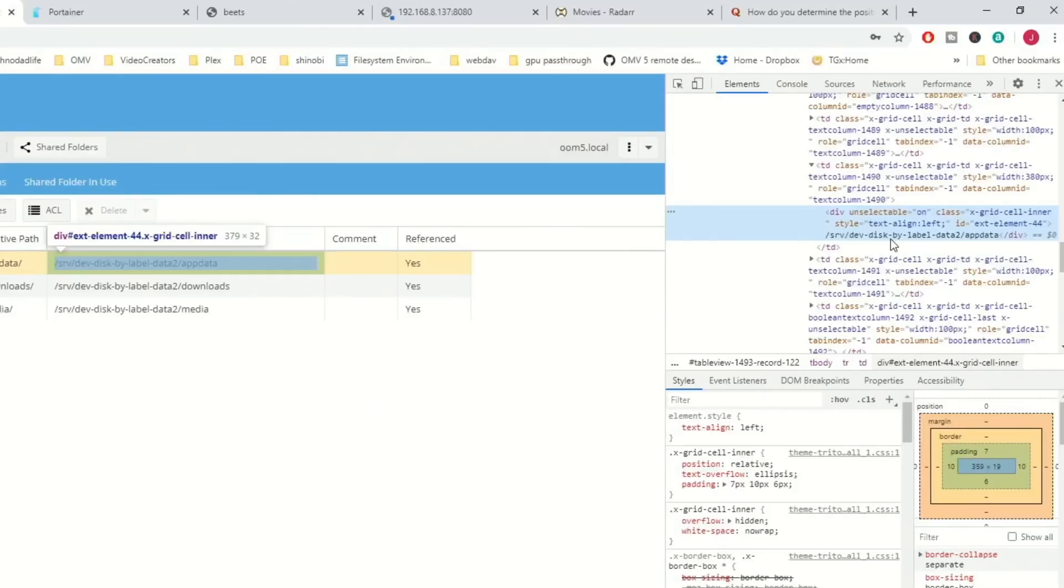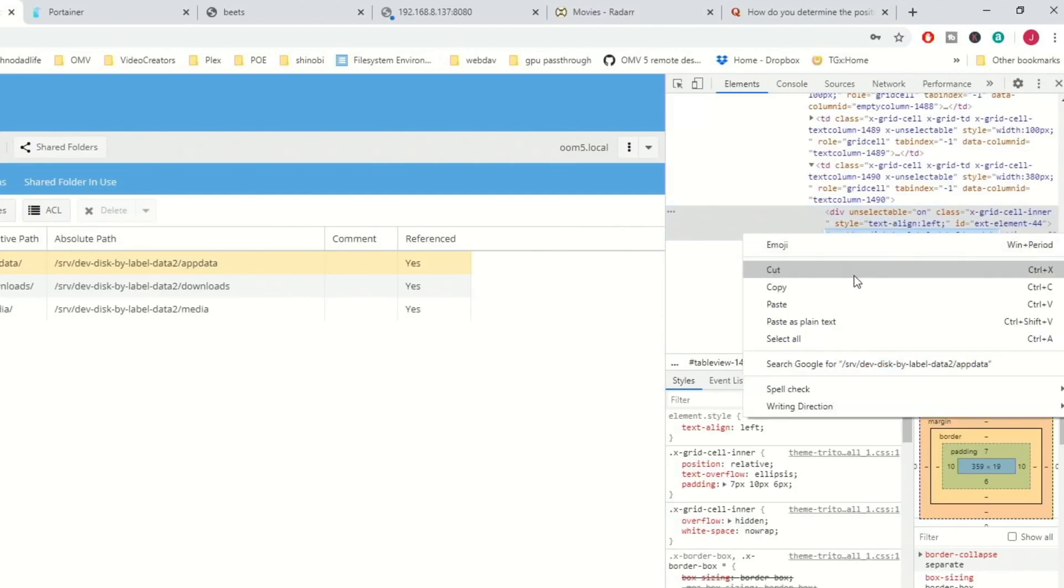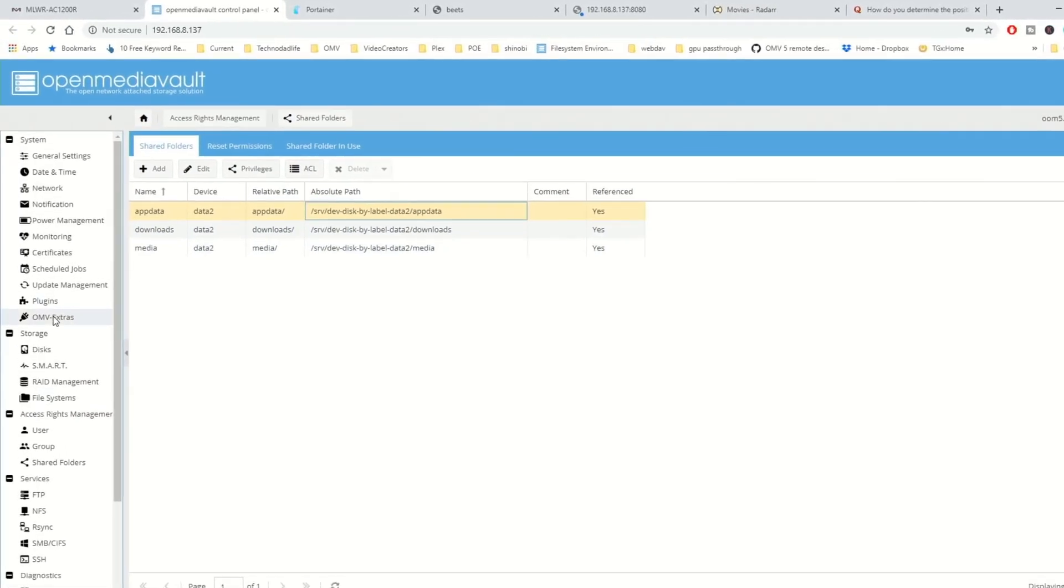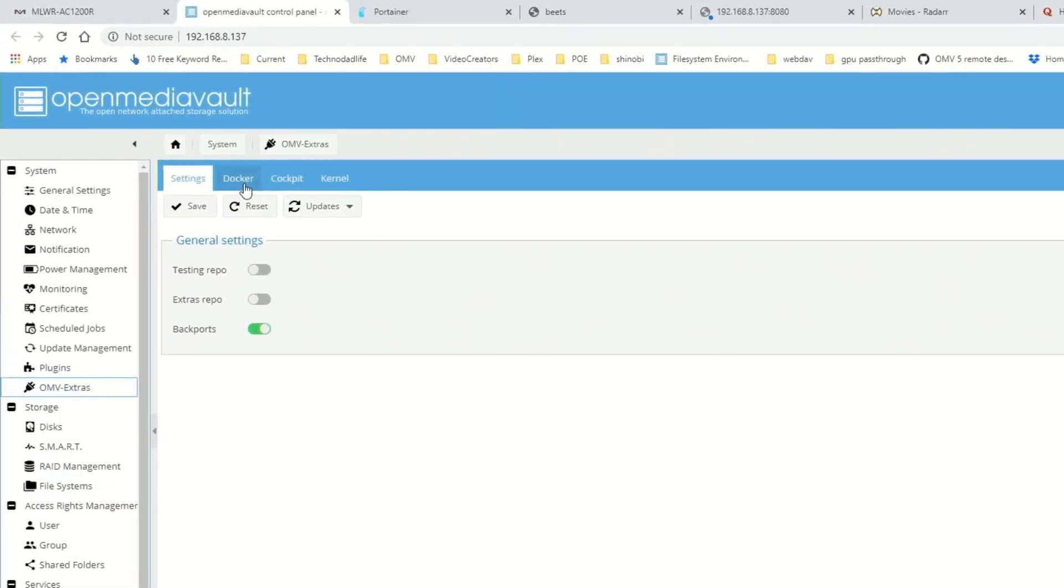Double-click on the disk. And then copy that. And you can close this. Go back to OMB Extras, Docker.